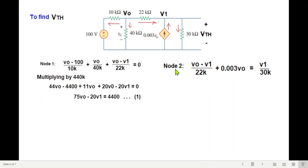Now we will write the equation at node 2. At node 2, similarly, this current entering, this is also entering, and this is leaving, so V1 30k leaving. Here also we multiply by the LCM 330k. Solving, we get second equation.